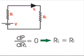Thus, in this case, the maximum power will be transferred to the load when load resistance is just equal to internal resistance of the battery.